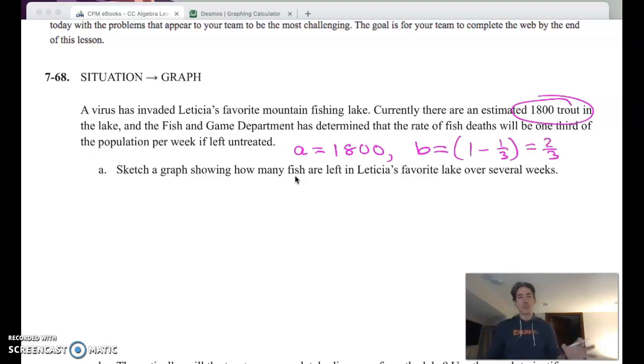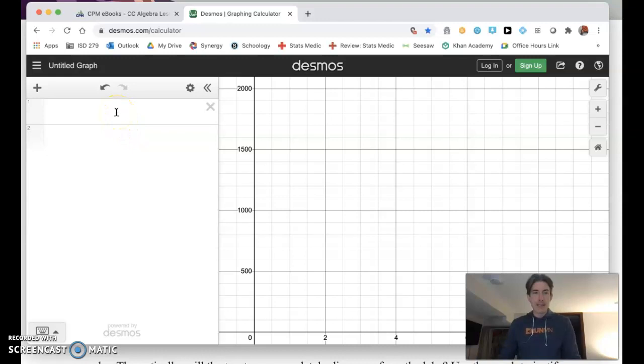We've got two-thirds of those fish coming back week after week. If I write this function first, y equals 1800 times two-thirds to the x power, now I've got a very helpful tool for the purposes of sketching. I've got an equation. I set up a decimals window ahead of time because graphs are at best estimation, but we can throw technology on there and we can get far more exact.